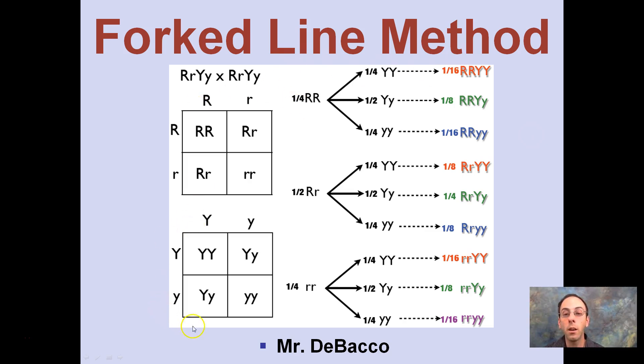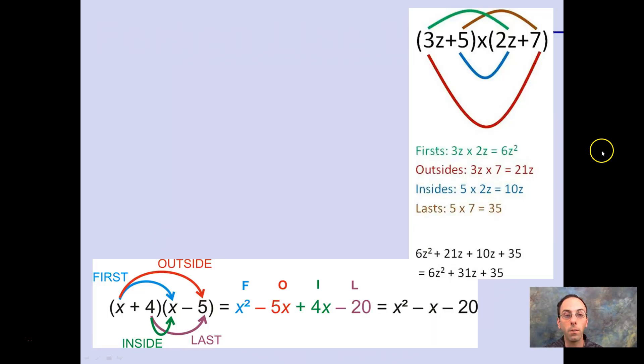Punnett squares are represented here, but this forked line method is a very efficient way and a great way to handle larger crosses because in this case we're going to use the example of a trihybrid cross. I know you thought the fun stopped with dihybrid crosses, but it only just began there. We're now into trihybrid crosses and this forked line method will make it a lot easier once you fully understand it.